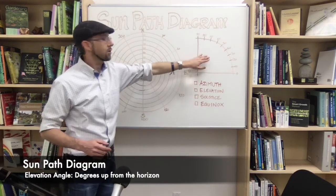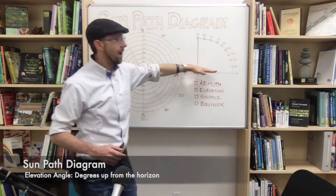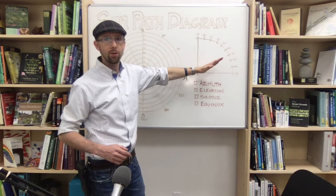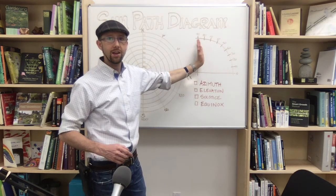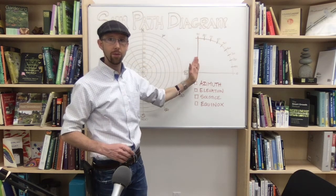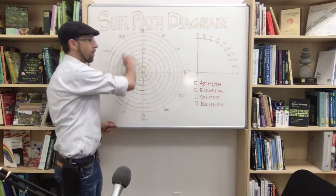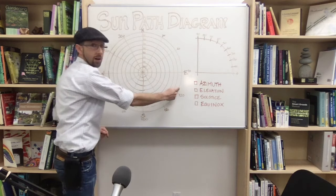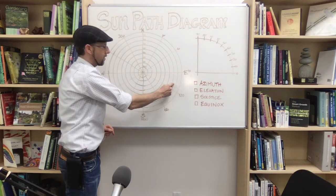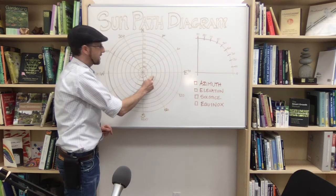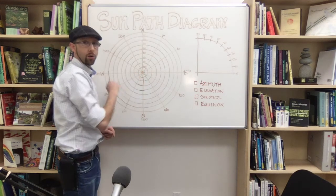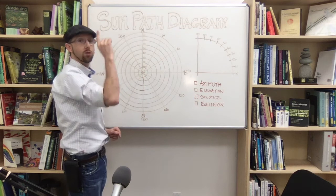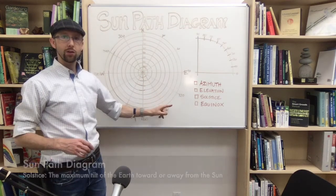The elevation angle is the angle up from the horizon line — so zero degrees is the horizon, and going up 10, 20, 30, 40, 50, 60, 70, 80, to 90 degrees, which is straight up. On the diagram, these lines represent the horizon at zero all the way to the center, which is directly overhead.